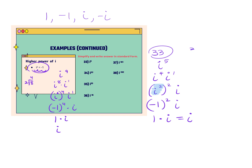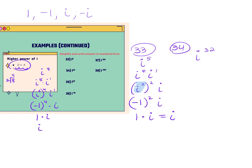For number 34, i raised to the 32nd power: notice it's already even, so there's no extra leftover i. Take 32 and divide by 2 to get i squared raised to the 16th power. Change i squared to negative 1. Negative 1 raised to an even exponent turns positive. The final answer is 1.